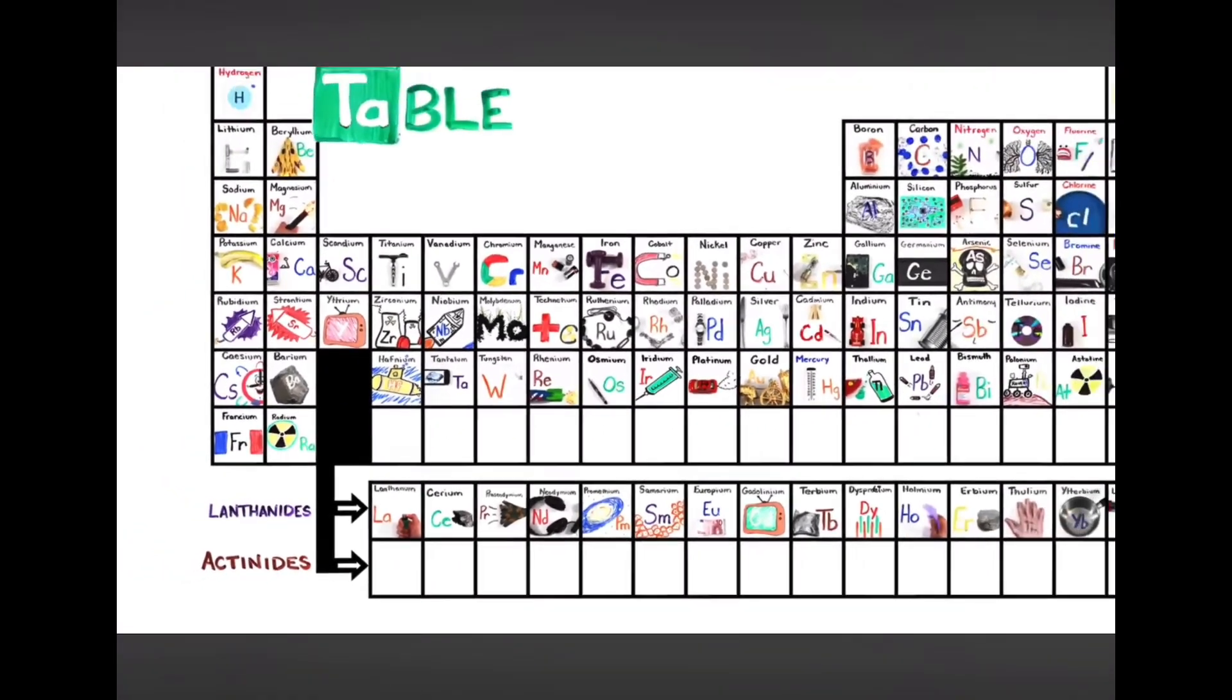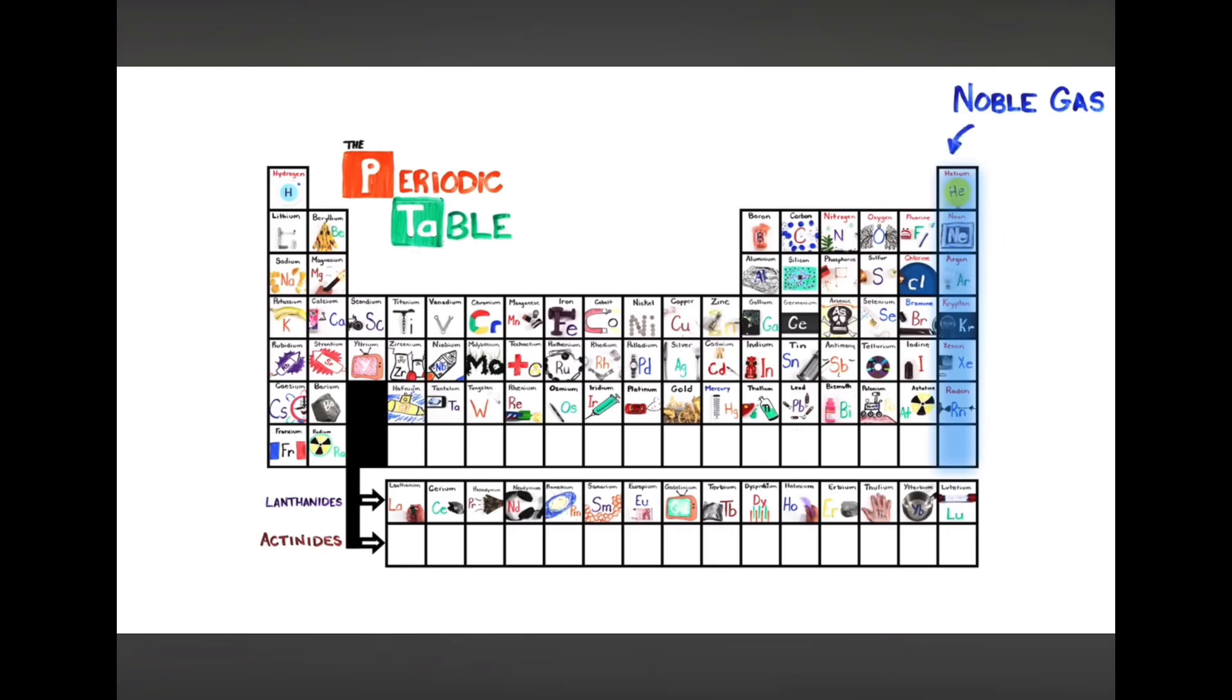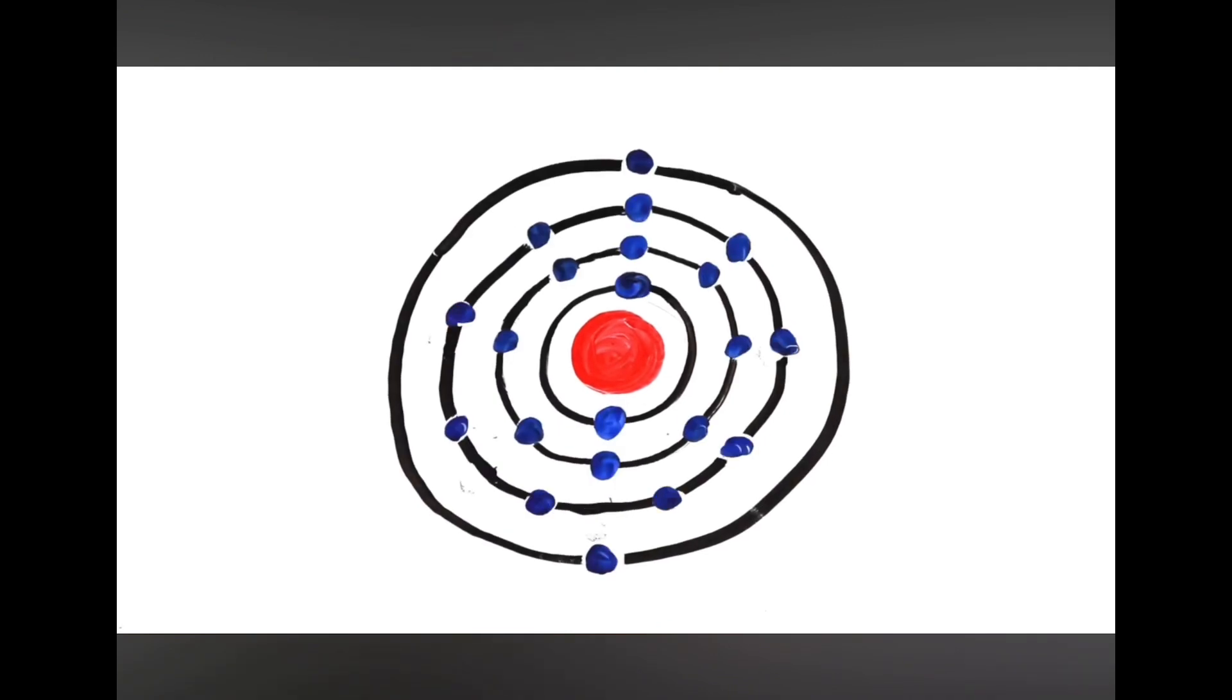This is the periodic table, noble gases stable, halogens and alkali react aggressively, each period will see new outer shells while electrons are added moving to the right.